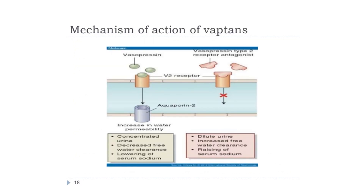The mechanism of action of vaptans involves aquaresis — excretion of solute-free urine. Unlike diuretics, vaptans promote excretion of water without loss of electrolytes, hence characterized as aquaretics. Vaptans act on vasopressin type-2 receptors in the collecting duct, increasing solute-free water excretion. They are used as an alternative to fluid restriction in euvolemic and hypervolemic hyponatremic patients, and their efficacy is well-accepted for short-term correction of hyponatremia.